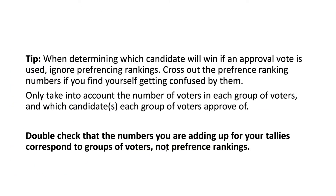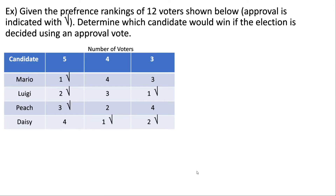Now we'll get into some more complex examples. When determining which candidate will win using an approval vote, ignore preference rankings — cross them out if you find yourself getting confused. Only take into account the number of voters in each group and which candidates each group approves of. A very common mistake is adding up preference rankings instead of number of voters. Double check that the numbers you're adding correspond to groups of voters, not preference rankings.